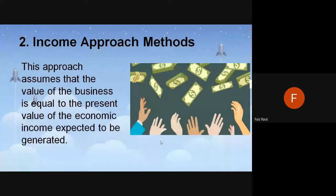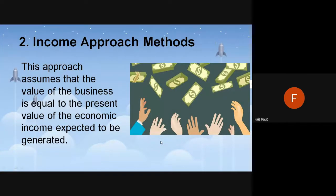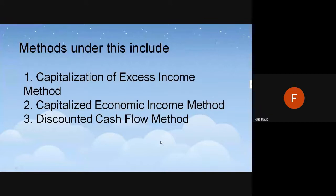The income approach evaluates the business by checking the present value, what the present income is, what the previous incomes were, and using a growth rate of maybe three, four, five, or six percent to predict future income. There are three methods: capitalization of excess income method, capitalized economic income method, and discounted cash flow method — which is very relevant nowadays.